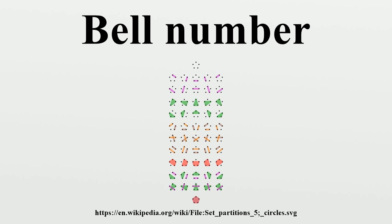As suggested by the set notation, we consider neither the order of the partitions nor the order of elements within each partition. This means that partitionings such as {B,A},{C} and {A,C},{B} are all considered identical. If instead different orderings of the sets are considered to be different partitions, then the number of these ordered partitions is given by the ordered Bell numbers.